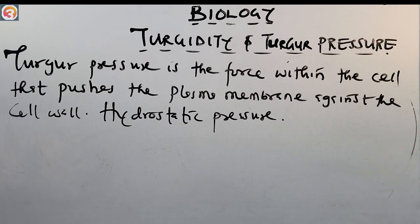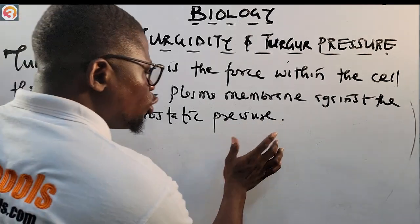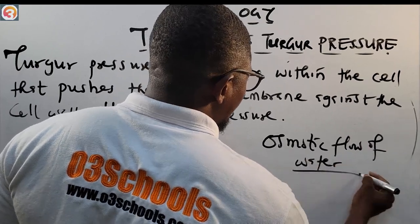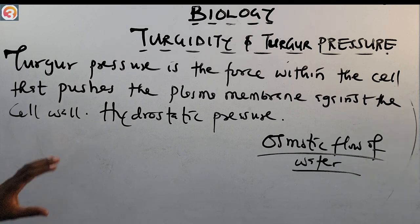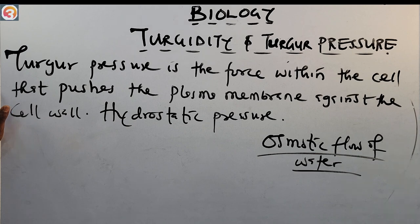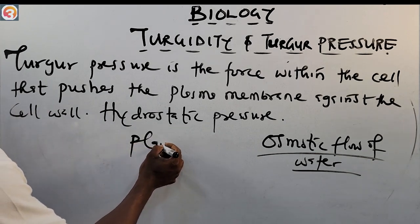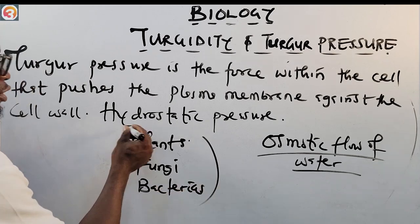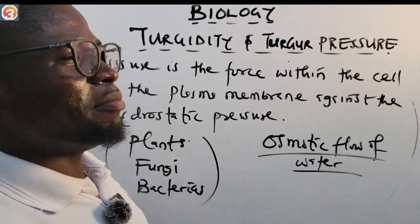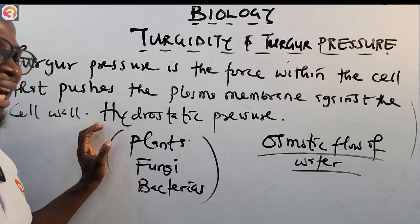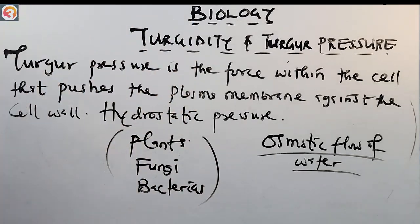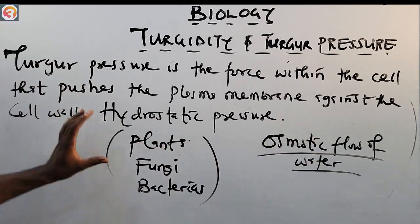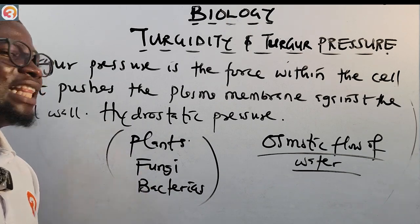Turgor pressure is caused by the osmotic flow of water. As water flows into the plant cell by osmosis, it generates turgor pressure. It occurs in plants, fungi, and bacteria.